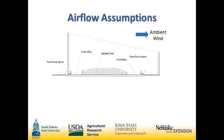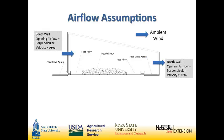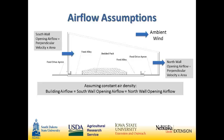Going into this, we started out with some assumptions. I want to take a little bit of time to talk about the mechanics between the airflow, concentration, and emission in these barns — what we started out with and where we ended up. Our initial assumptions were that for a south wind — meaning wind blowing from south to north — we would have airflow through the south wall opening and the north wall opening. Now, if we assume constant air density, meaning temperature is consistent through that barn, the airflow that enters the south wall should equal the airflow that exits.